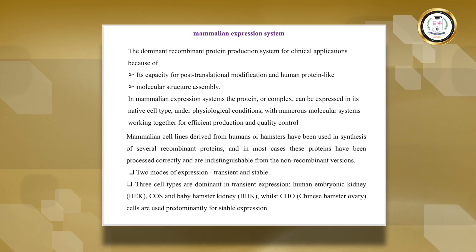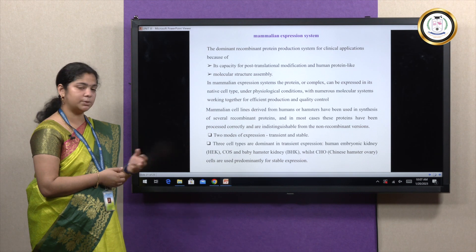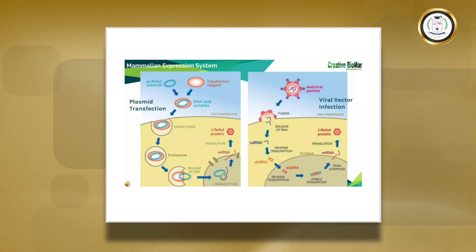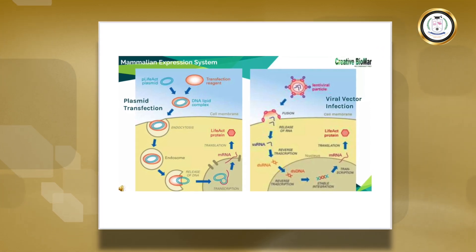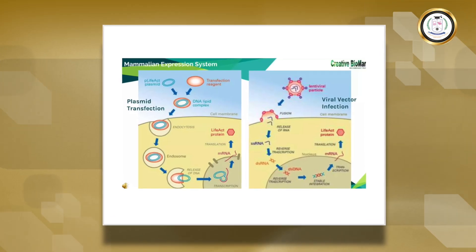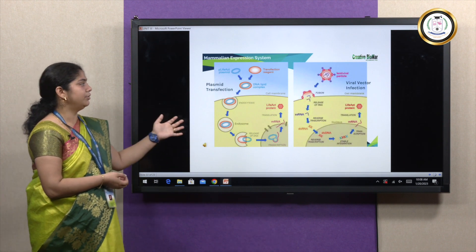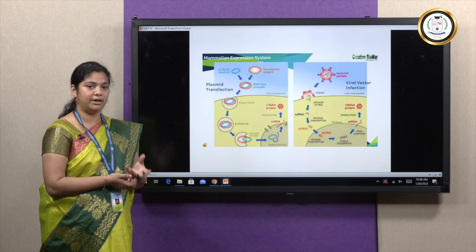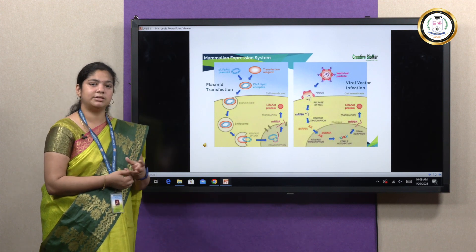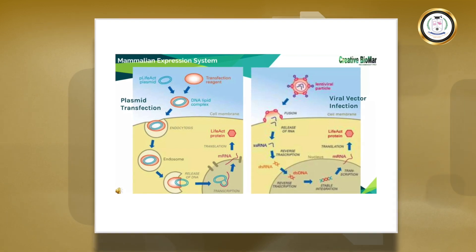Two modes of expression are possible: transient and stable. Transient expression is used in basic research, whereas stable expression is essential for therapy — to obtain a recombinant protein for disease treatment. The mammalian expression system is more costly compared to other methods, but it is more accurate and produces a human-like form of protein. There are two methods: plasmid transfection using a liposome carrier vehicle, and viral transfection (transduction) where the gene of interest is inserted into the target cell via a manipulated virus.